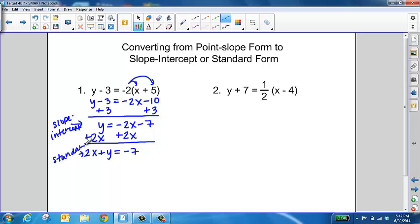So you can actually get to both from point slope. So let's try it again with number 2. The first thing that we're going to do is distribute in that 1 half. So this is going to give us y plus 7 equals 1 half x minus 2.